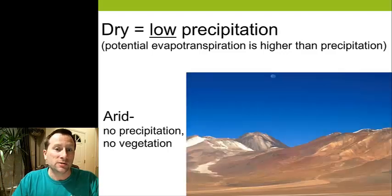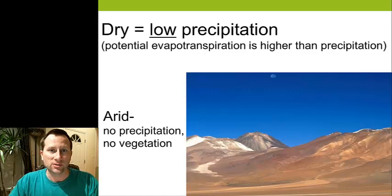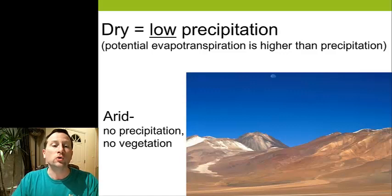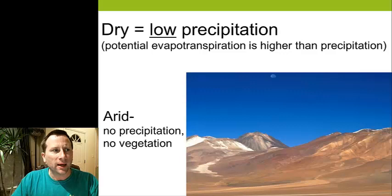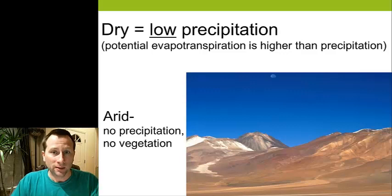The next dry climate is arid, meaning there is no precipitation and no vegetation. The Atacama Desert of Chile is the most arid place on Earth. They had a rain shower once about 40 years ago, and other than that it's been about 400 years since they've had rain. It literally never rains in parts of the Atacama Desert.